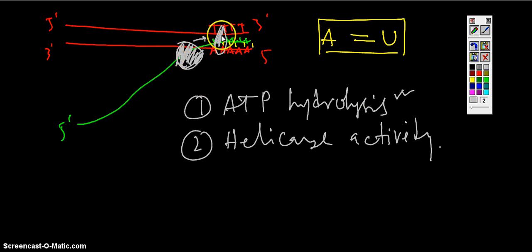Let me draw it here, so here is my protein now. Now what happens, it activates its helicase activity and it breaks the bond between A and U and it releases the mRNA from the DNA. So now when the mRNA has been released here,